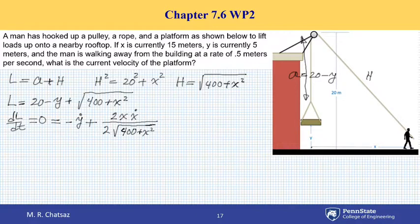So at this point, I have a relationship for velocities. The man is walking away at a rate of 0.5 meters per second. That is X dot. And we want to solve the equation for Y dot. Therefore, Y dot is really velocity of the platform.